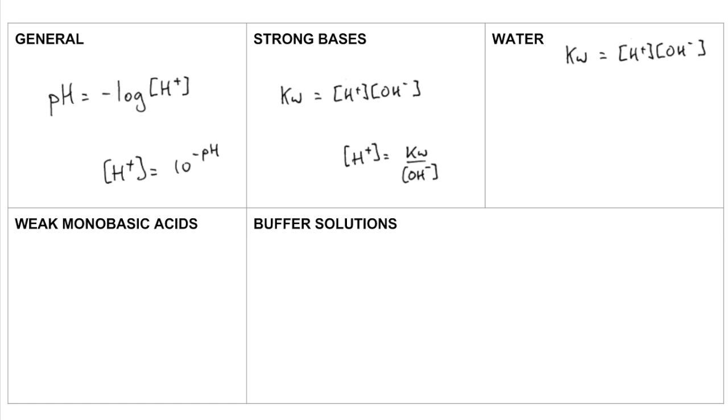So if you've got a question about water, we use the KW expression again. And often they'll ask you to calculate the pH of water at a different temperature, other than 25 degrees C. So we need to bear in mind that the H plus concentration and the OH minus ion concentration are the same.